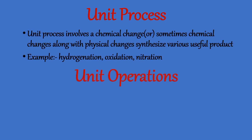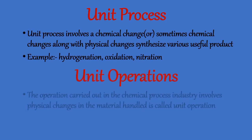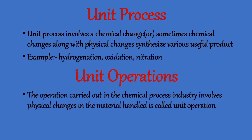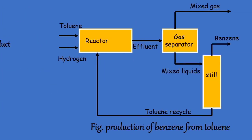Now, unit operation. The operation carried out in the chemical process industry that involves physical changes in the material handled is called unit operation. Examples include size reduction and heat transfer operation.